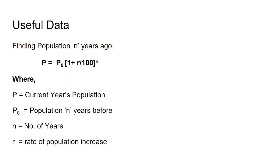Here I will briefly discuss how to find population N years ago. The formula is: P equals P0 multiplied by one plus r divided by 100, raised to the power N. Where P equals current year's population, P0 is population N years before, N equals number of years, and r equals rate of population increase.